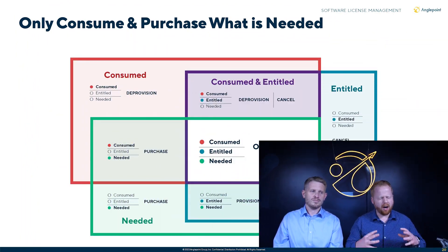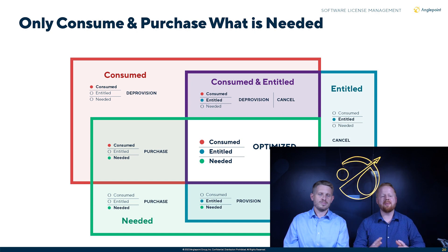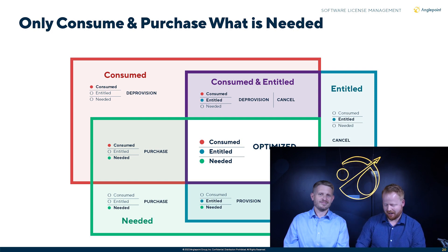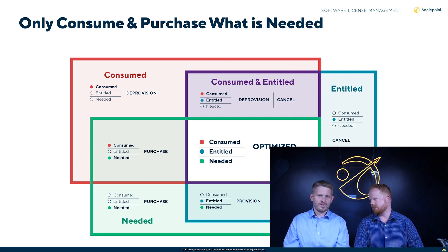One of the things we want to talk about now is three different worlds, and there will be a visual here. Our goal is that we really only want to consume and purchase what we actually need as an organization. These hypothetical boxes can represent a certain publisher's software, or you could drill down to a per-product or per-application basis — the point is it's something consumable and licensable.